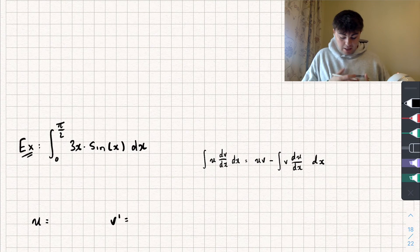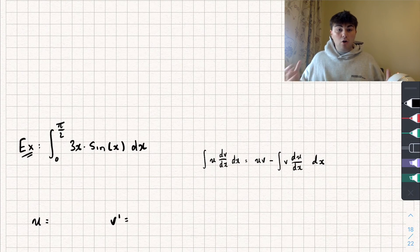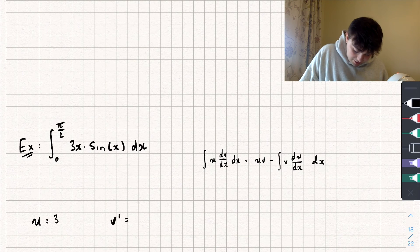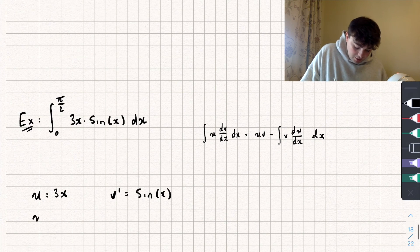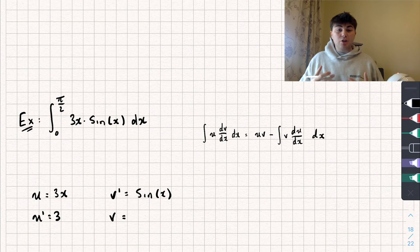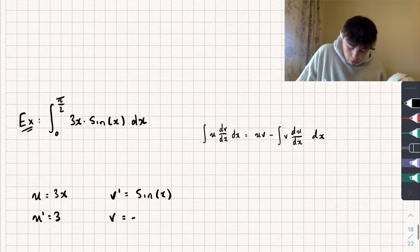Which one is going to differentiate to something nicer? Is it going to be 3x, which differentiates to 3, or sine of x, which differentiates to cos of x? I think 3x is a bit nicer to differentiate, so I'm going to set that equal to u, which means sine of x is going to be equal to my derivative of v. Taking the derivative of u gives 3, and integrating sine of x gives negative cos of x, which equals v.